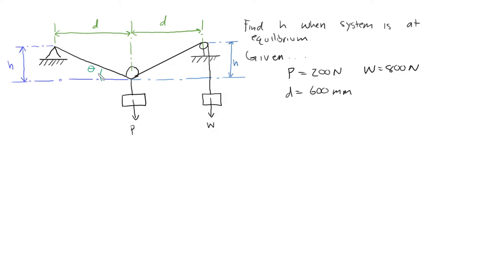The only way we could find this angle is by looking at the forces acting in these cables. I'm going to define these pulleys or pivots as A, B, and C. One thing to note: this angle equals that angle because this is h, this is h, this is d, this is d. So these right triangles are the same, and they must have the same angle. That is very important to know.